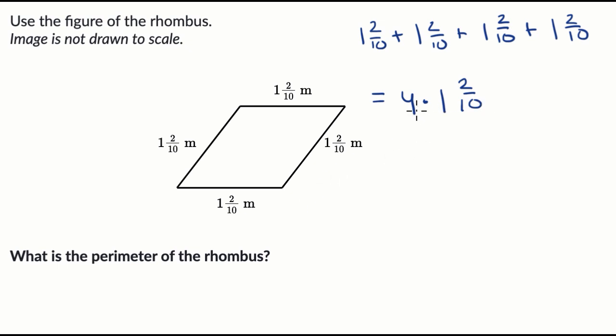And then here, we could either say that this is going to be the same thing as four times one plus two tenths. And then we distribute this four, which is going to be four plus four times two tenths is going to be eight tenths. Four plus eight tenths, which is the same thing as four and eight tenths, which is the same thing as four and four fifths meters.